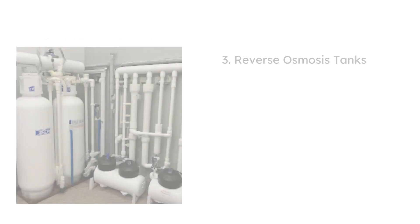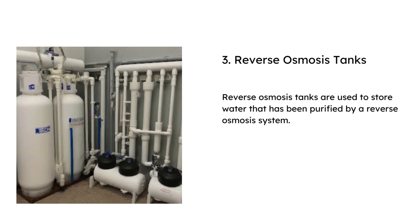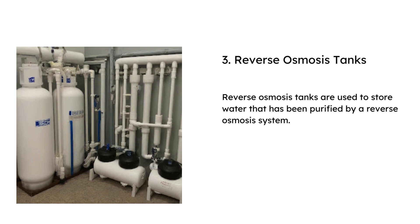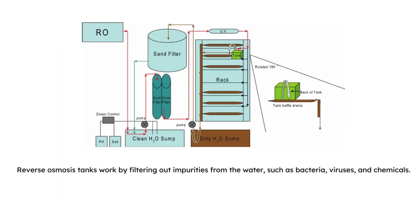Third: reverse osmosis tanks. Reverse osmosis tanks are used to store water that has been purified by a reverse osmosis system. They are typically used in homes or businesses that have their own water purification systems. Reverse osmosis tanks work by filtering out impurities from the water, such as bacteria, viruses, and chemicals. They are typically made of plastic.